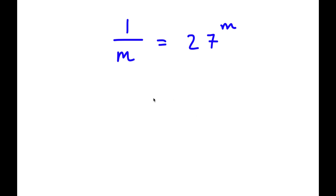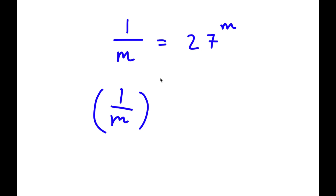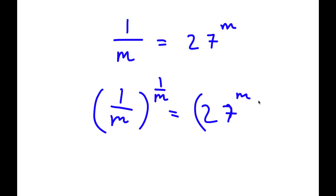In this problem, I have 1 over m is equal to 27 to the power of m. To solve this, I'm going to first start by taking the power of 1 over m on both sides. So now I have 1 over m to the power of 1 over m is equal to 27 to the power of m to the power of 1 over m.